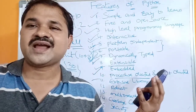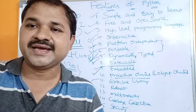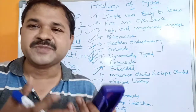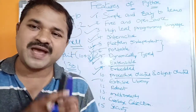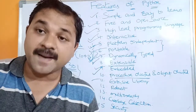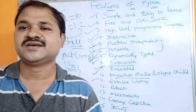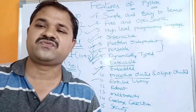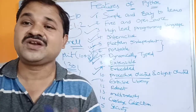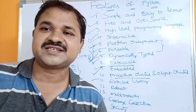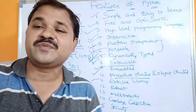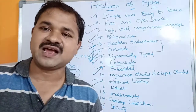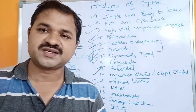The next feature is that Python has an extensive library. Libraries such as NumPy and pandas allow you to develop very complex applications using machine learning and deep learning algorithms. These extensive libraries are a major strength of Python and are not available in other languages like Java or C#.